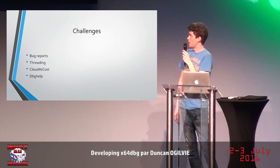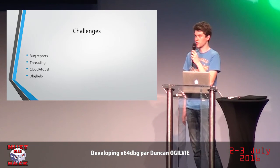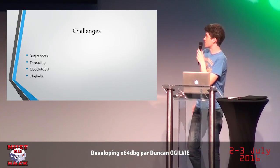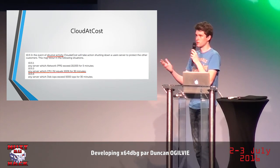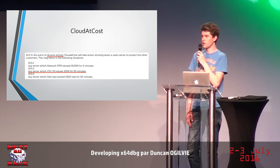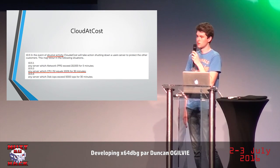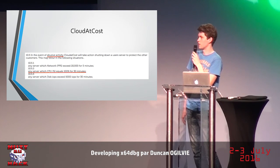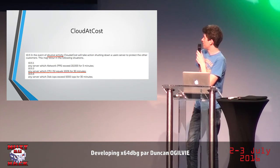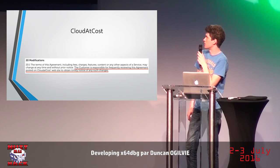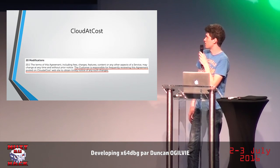Another interesting thing: for continuous integration, I basically rented a server at a company called Cloud at Cost. My server kept shutting down while building, which makes no sense. I went on Twitter to ask, and everybody said I should read the terms of service. I already had, but they changed them — and according to them, abusive activity is 30 minutes of CPU time, which is very weird because that's just a normal build process. And I checked, and indeed according to them I'm responsible for frequently reviewing the agreement posted on Cloud at Cost's website to obtain timely notice of any such changes — which is pretty hilarious and frankly illegal in Europe as far as I'm aware.